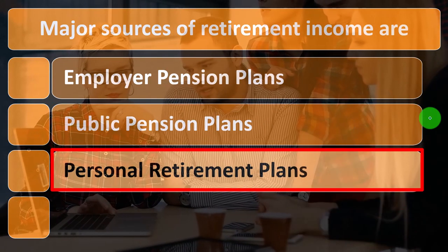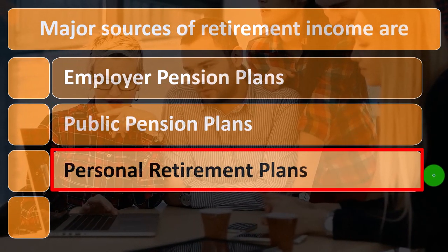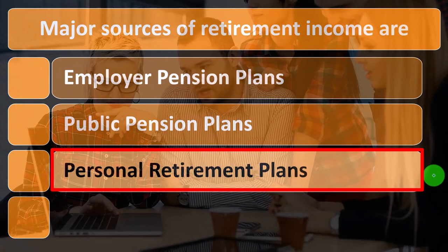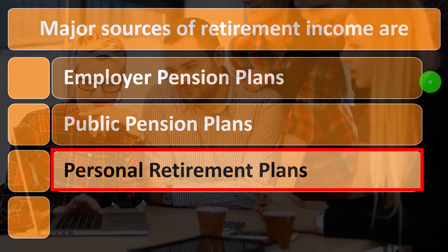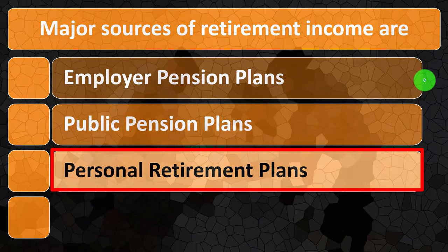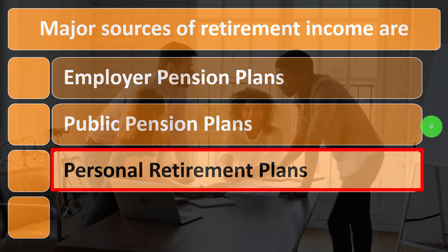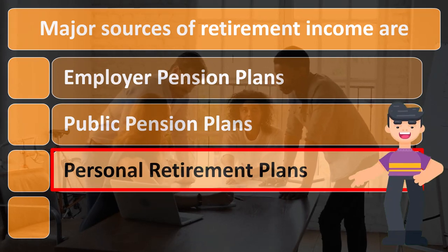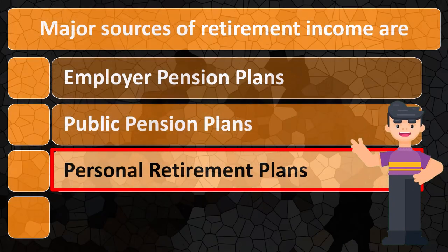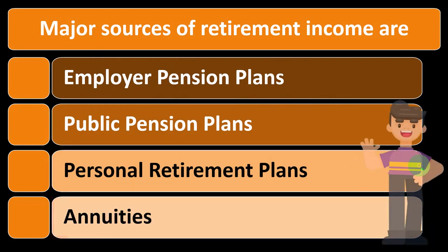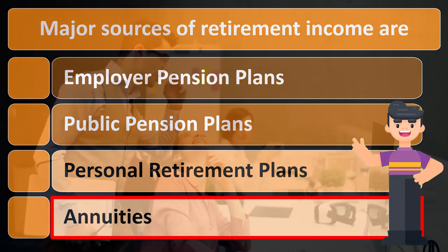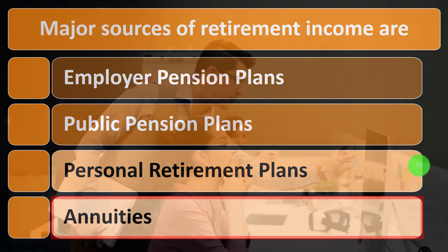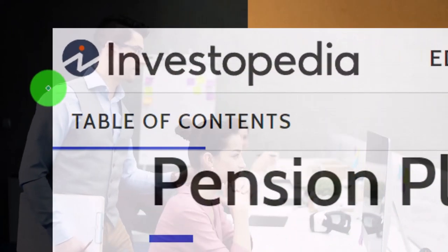Personal retirement plans include personal savings such as an IRA, a 401k — which is similar to an employer pension plan — a 403b, or other savings set aside for retirement. We'll discuss those plans in a future presentation. We also have annuities, another vehicle often used for retirement, which we've covered in prior presentations.